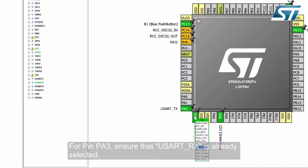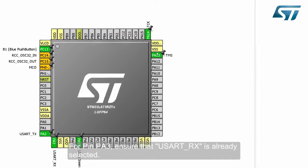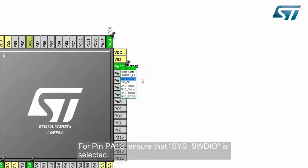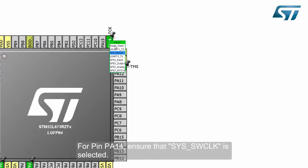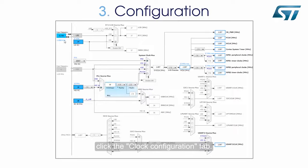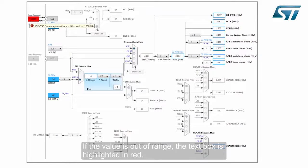For pin PA3, ensure that USART RX is already selected. For pin PA13, ensure that SWD SWDIO is selected. To easily modify clock frequencies, click the Clock Configuration tab. We can change the input frequency. If the value is out of range, the text box is highlighted in red.